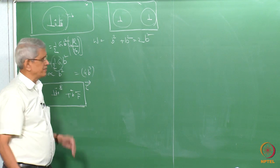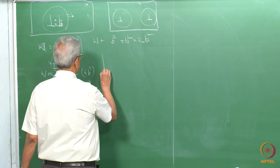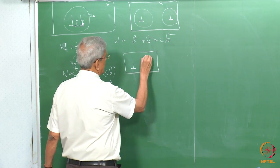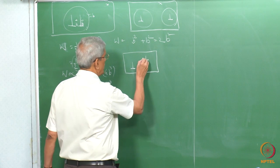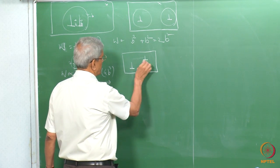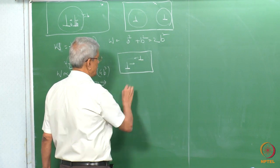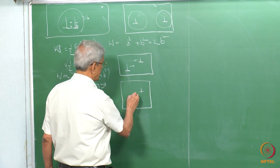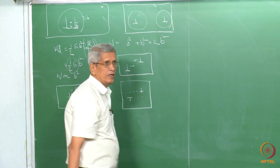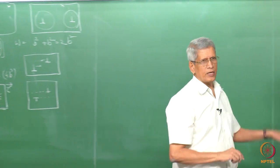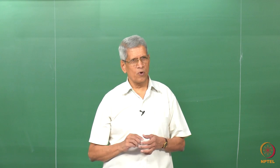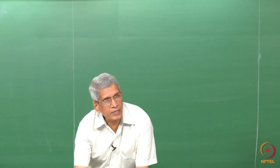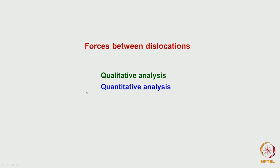A third case to consider is when dislocations are not in the same slip plane — one dislocation in one plane and another dislocation in a different plane. What forces will happen in that case? Looking at it qualitatively, it is difficult to tell. We need a quantitative expression to find what stresses and forces act between dislocations in different slip planes. This is precisely what we will try to derive.